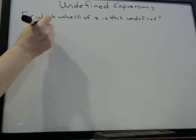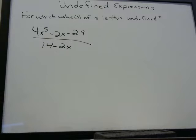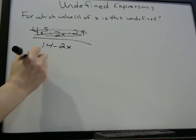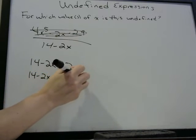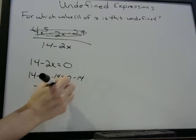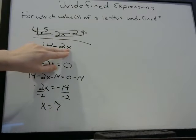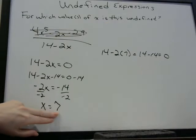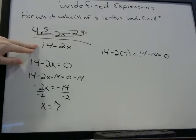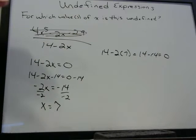It may look like a very complicated problem, but again when you see this, forget about the numerator — when does the denominator equal zero? You need to know how to do algebra. We first get rid of the 14 on each side, giving us negative 2x equals negative 14. Divide by negative 2 and x equals 7. When we plug in 7: 14 minus 2 times 7 is 14 minus 14, which equals zero — so x equals 7 makes this fraction undefined.